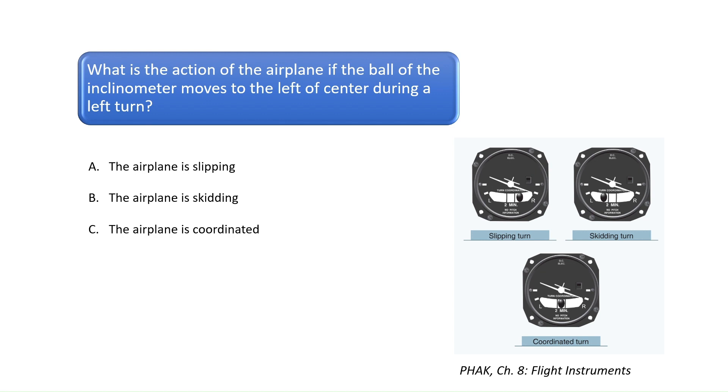Conversely, if the ball of the inclinometer is moving in the opposite direction of the bank of the airplane, then the aircraft is in a skidding turn. The goal is to center the ball of the inclinometer when turning the aircraft to get a coordinated turn. If the aircraft is slipping, then more rudder needs to be applied in the direction of the turn. If the aircraft is skidding, then more rudder is needed on the opposite side of the turn. One way to remember how to execute a coordinated turn is to step on the ball, which means to apply more rudder in the direction that the ball of the inclinometer is deflected.